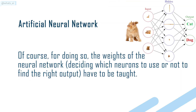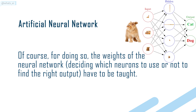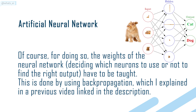Of course, for doing so, the weights of the neural network — deciding which neurons to use or not to find the right output — have to be taught. This is done by using back-propagation, which is explained in a previous video linked in the description.